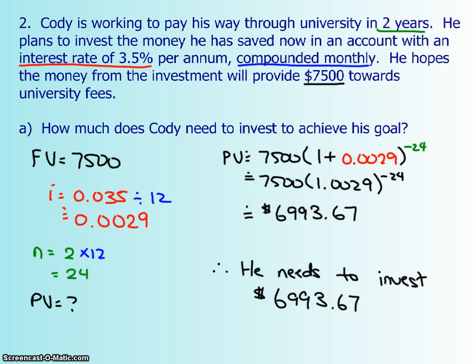Number two, Cody is working to pay his way through university in two years. He plans to invest the money he has saved now in an account with an interest rate of 3.5% per annum compounded monthly. He hopes the money from the investment will provide $7,500 towards university fees. How much does Cody need to invest to achieve his goal?